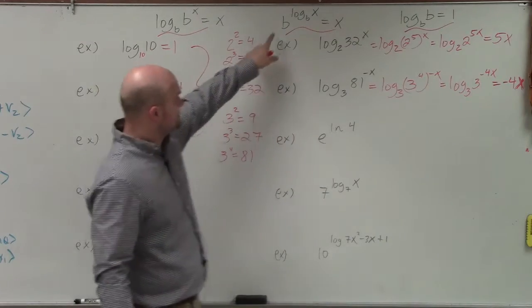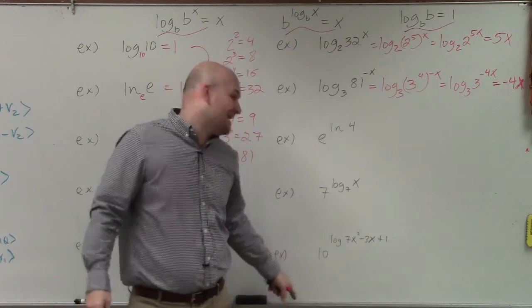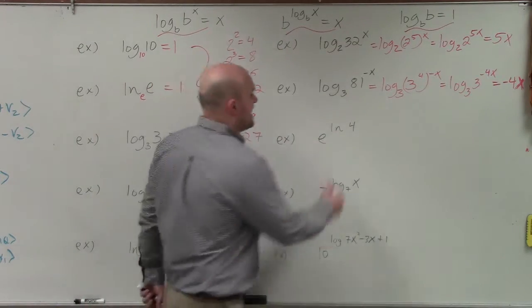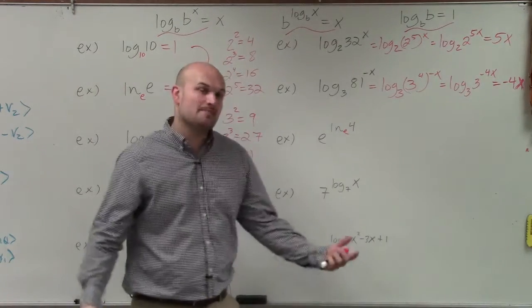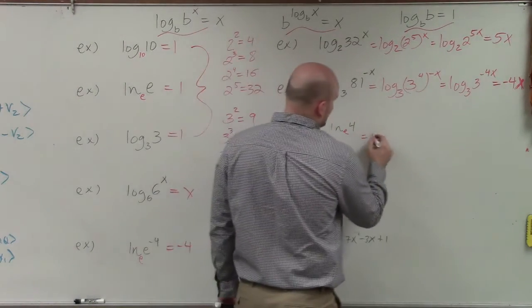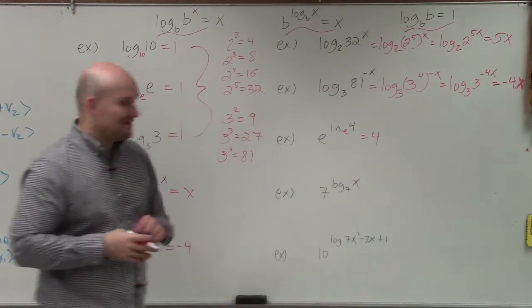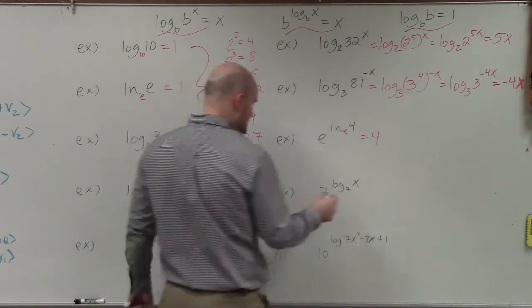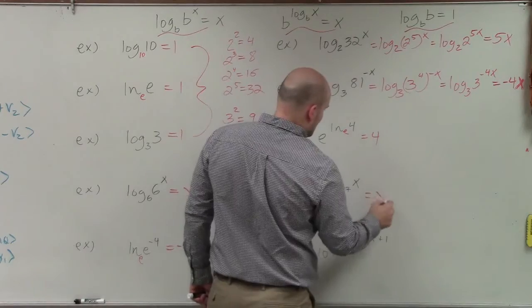Over here, so now the last example is we're just going to be using this rule, which I explained last. So if I have e raised to the ln of 4, just remember that e is in that base. So e raised to the ln of e, that's just going to equal 4. Over here, I have 7 raised to the log base 7 of x. That's just going to equal x.